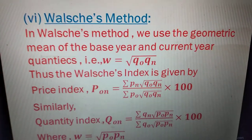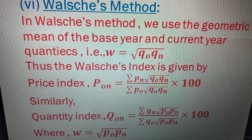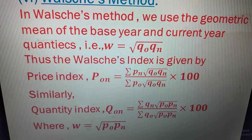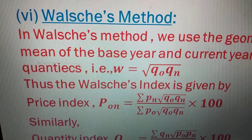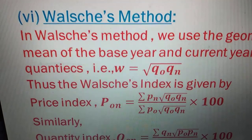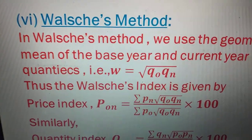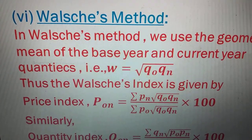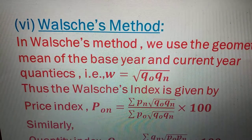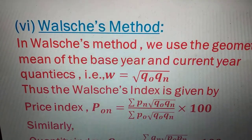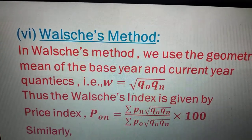This is Walsh's method of index numbers. In Walsh's method we use the geometric mean of the base year and current year quantities. That is, we denote weight W equal to root of q-suffix-o multiplied by q-suffix-n. Here w means weight, q-suffix-o means base year quantity, and q-suffix-n means current year quantity.